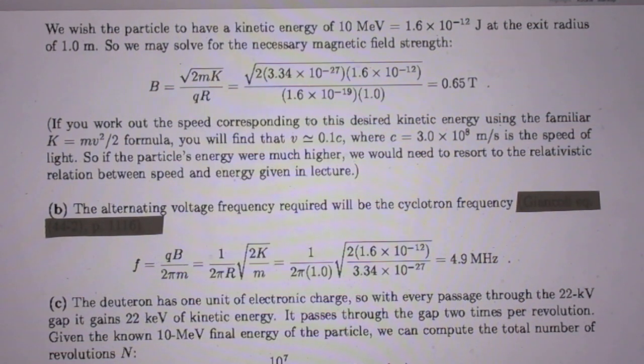So if the particle's energy were much higher, we would need to resort to the relativistic relation between speed and energy given in the lecture. But since it's not much higher, we can just live with it as it is now.